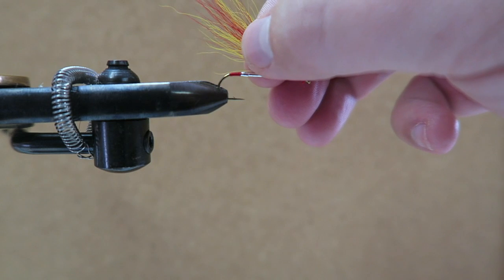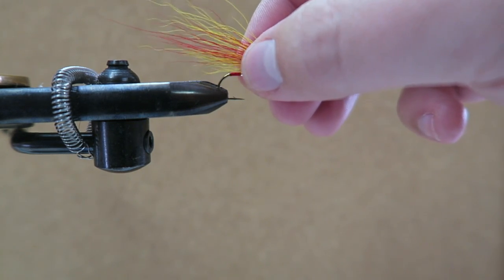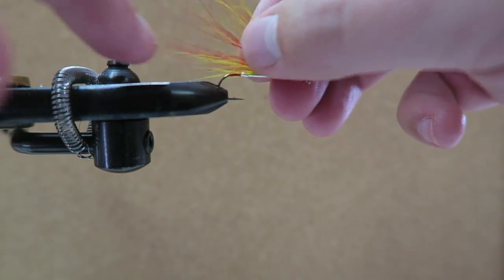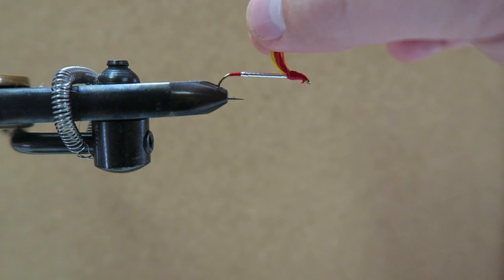I've also seen people use silver wire. They tie it in down here and wrap it over the tinsel body too, as a rib. It's just an optional thing you can do.